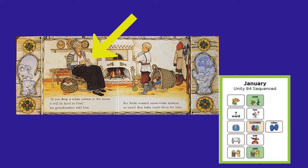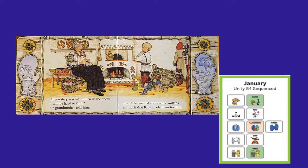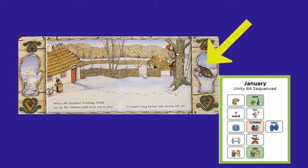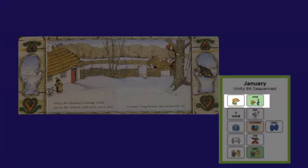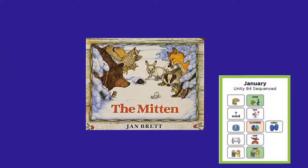She's making something. I wonder if she's making a mitten. The boy's climbing up a tree. I think he dropped something. What do you think he dropped? I wonder how he dropped it. And look there — there's an animal in the mitten. Somebody wanted to come in the mitten. Let's read the story and find out what happens.